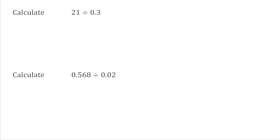For today's video we're going to take a look at dividing by decimals. For this first example we've got 21 divided by 0.3. When we're dividing by decimals, what we can do is turn these into questions where we're actually dividing by an integer — we don't want to be dividing by a decimal. So I can write 21 divided by 0.3 as a fraction: 21 over 0.3.